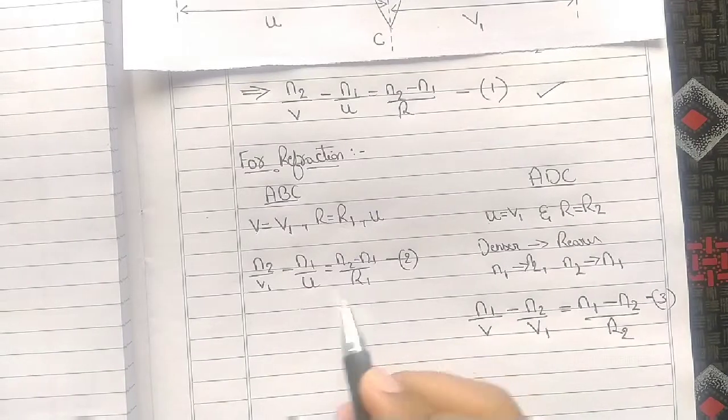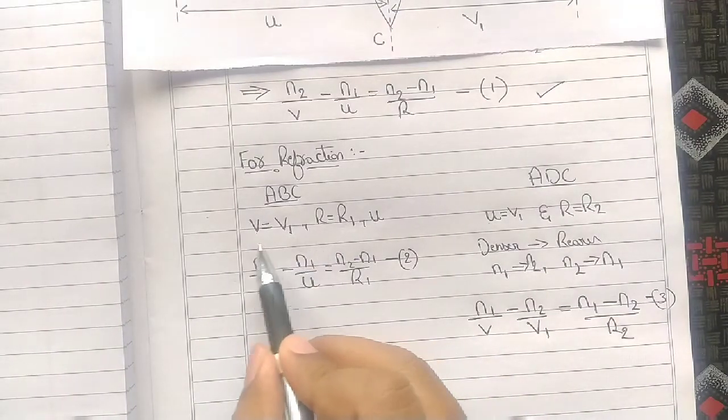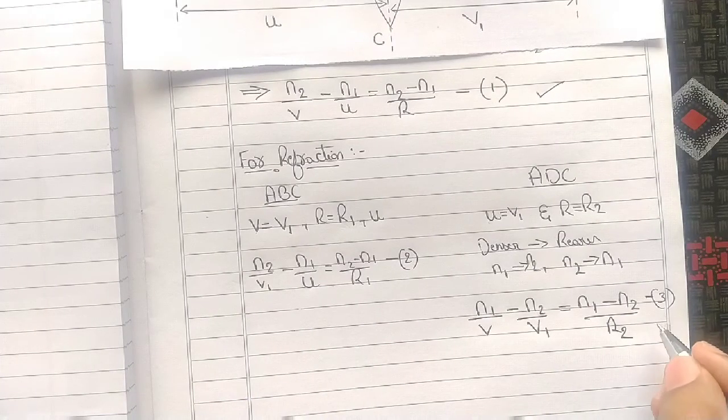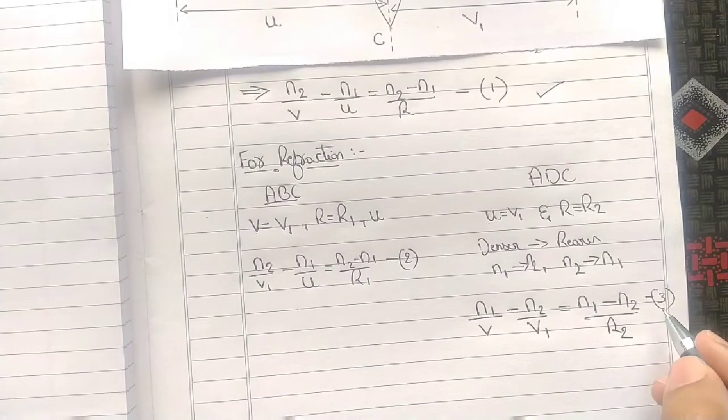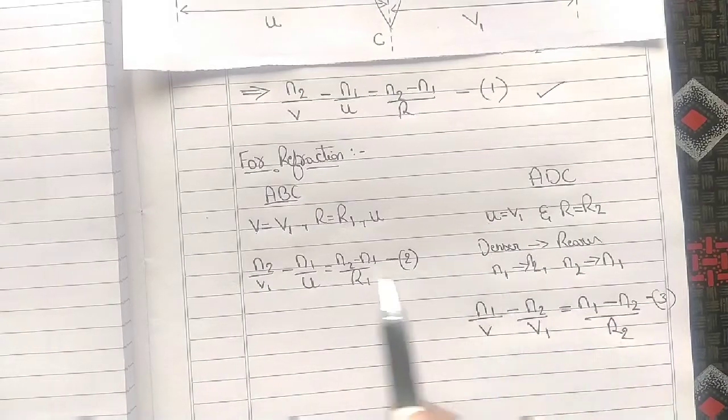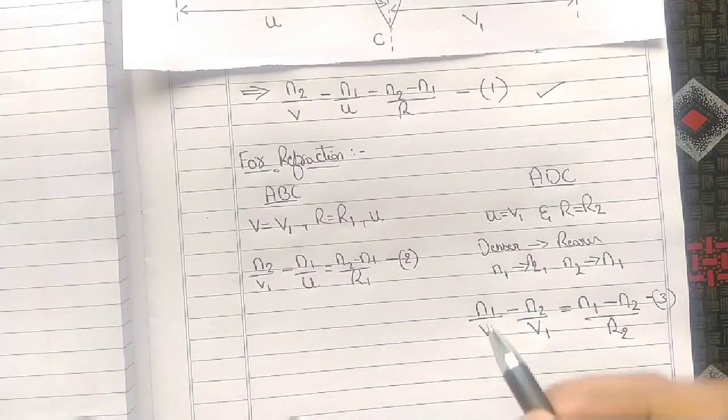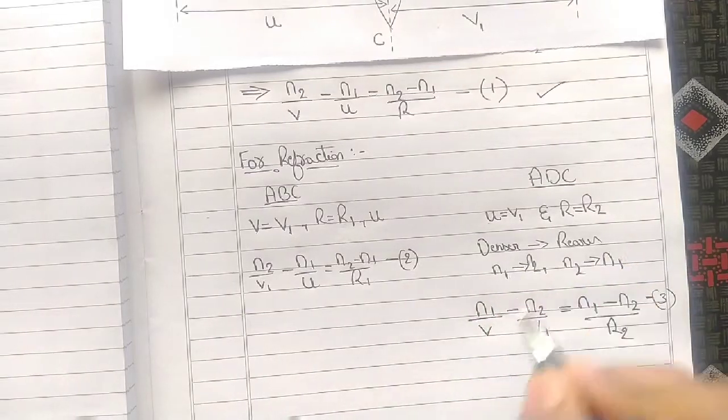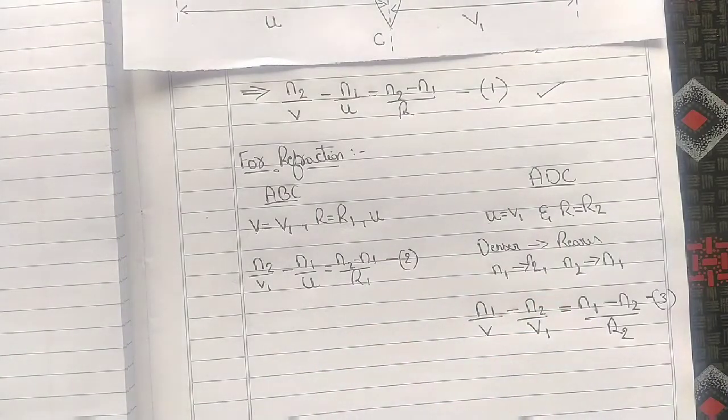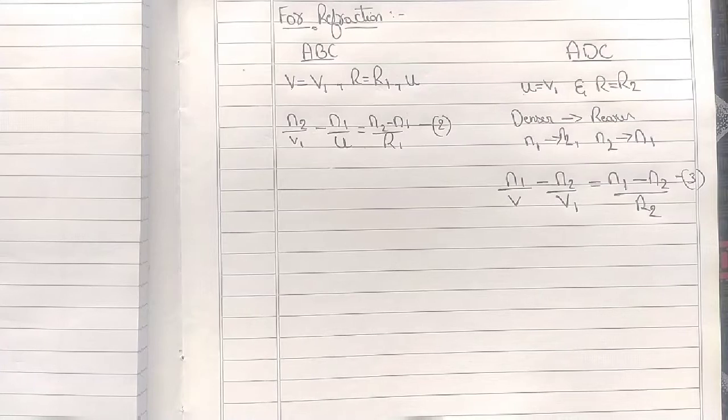You should formulate equation 2 by interchanging V as V1 and R as R1, and formulate equation 3 by considering the reverse of Case 1, because we are moving from denser to rarer medium. If you have any doubts with respect to this, please comment.